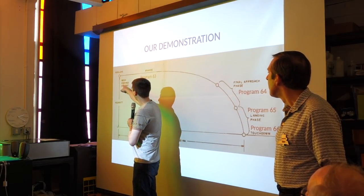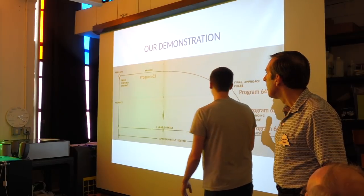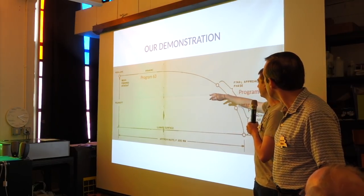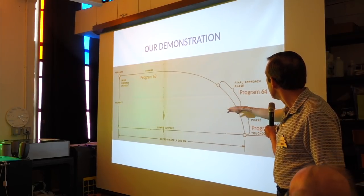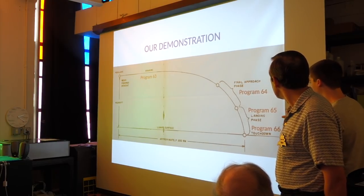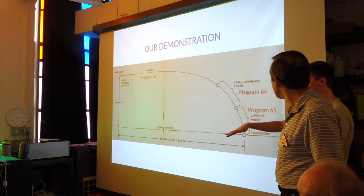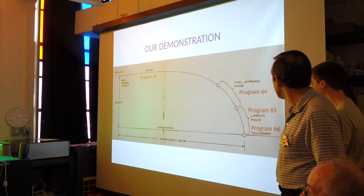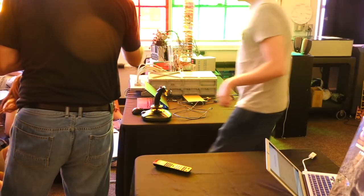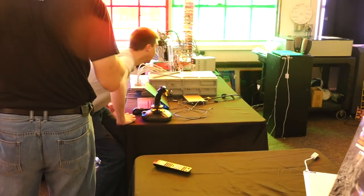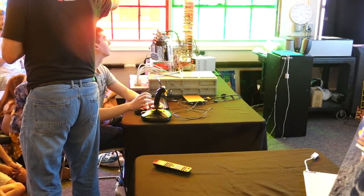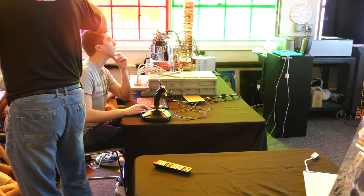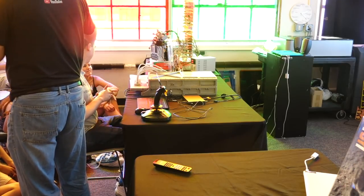We're going to start at Power Descent Initiation, or PDI. Once we get down to about 10,000 feet, the computer is going to switch into Program 64, pitch forward so the astronauts can see the landing site. Then once we get down low, there are two — technically three, but practically two — options for landing: Program 65, completely automatic control by the AGC, and Program 66, a semi-manual mode, which is what I'm going to be flying and what they flew on Apollo 11. Our pilot today is Mike Sturt. The thrusters output is wired to this NASA-approved Lego version of the LEM.